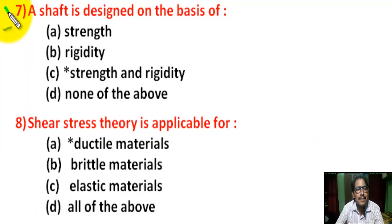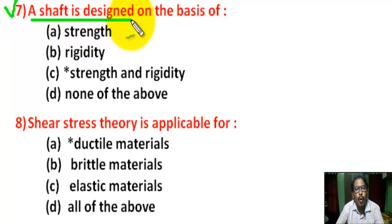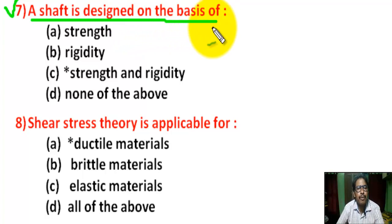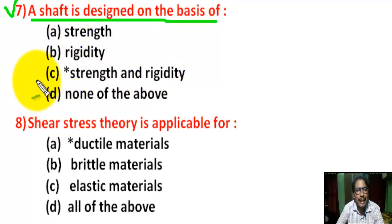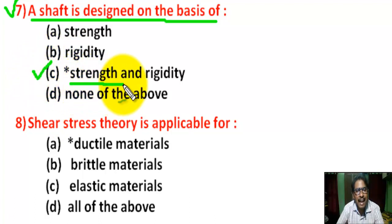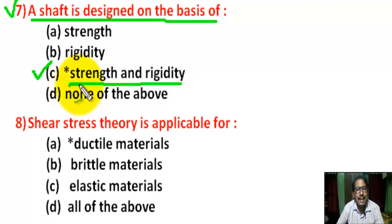Question number 7: a shaft is designed on the basis of — there are 4 options. The correct answer is C: Considering both strength and rigidity.